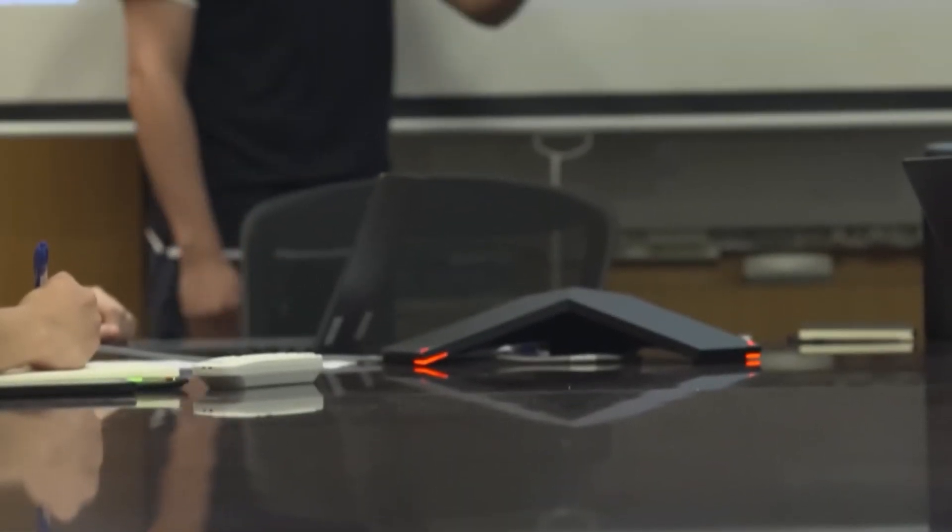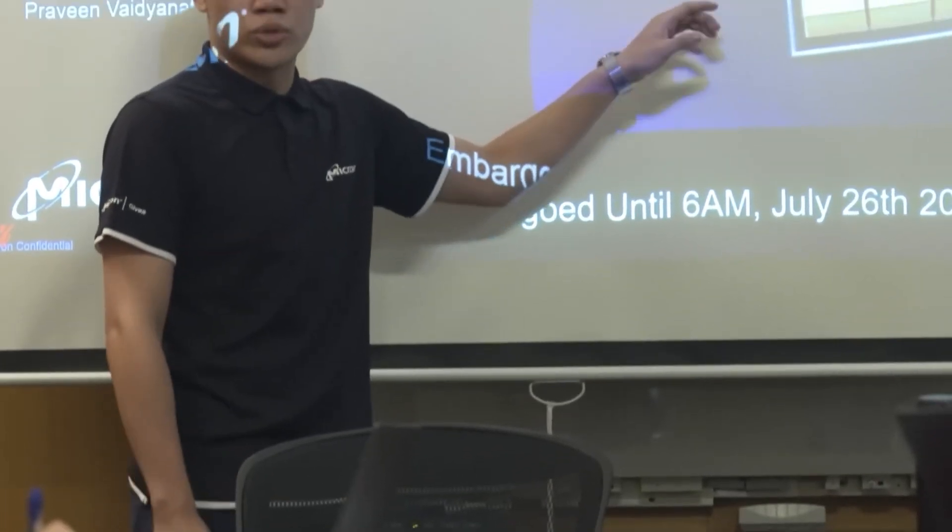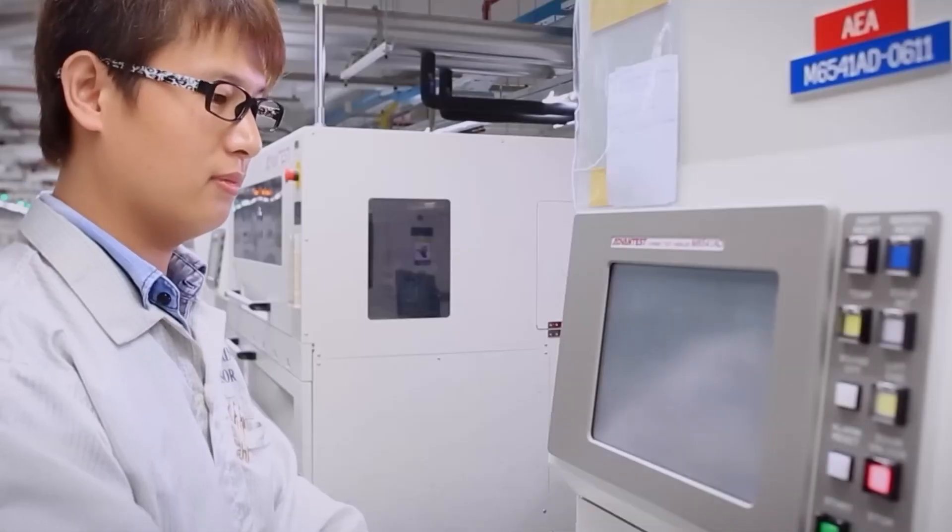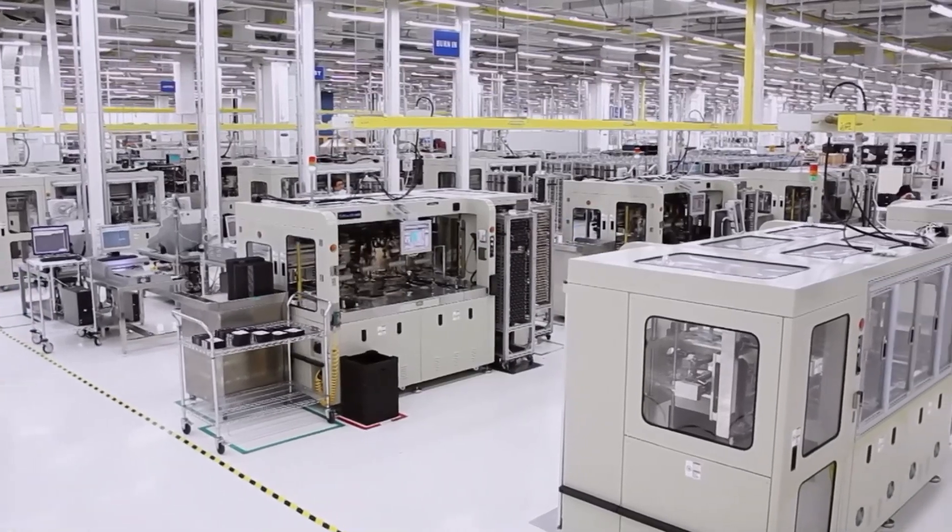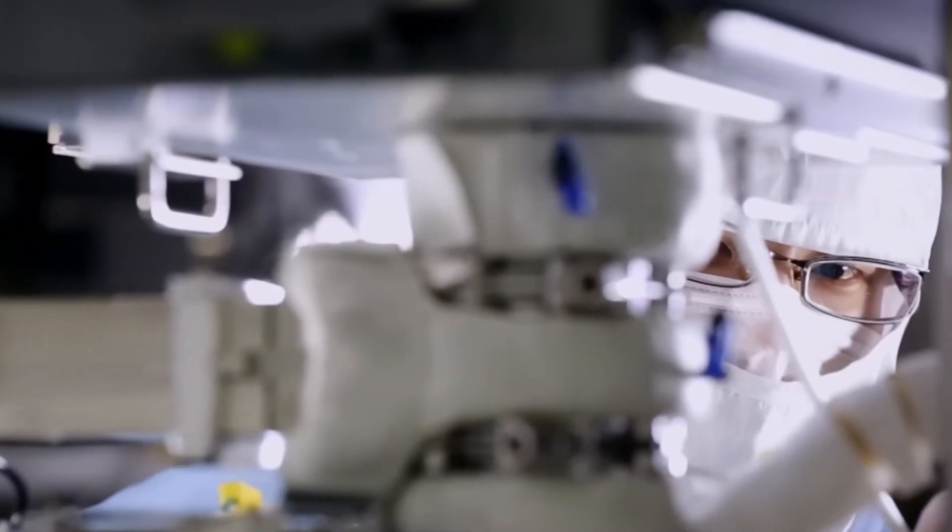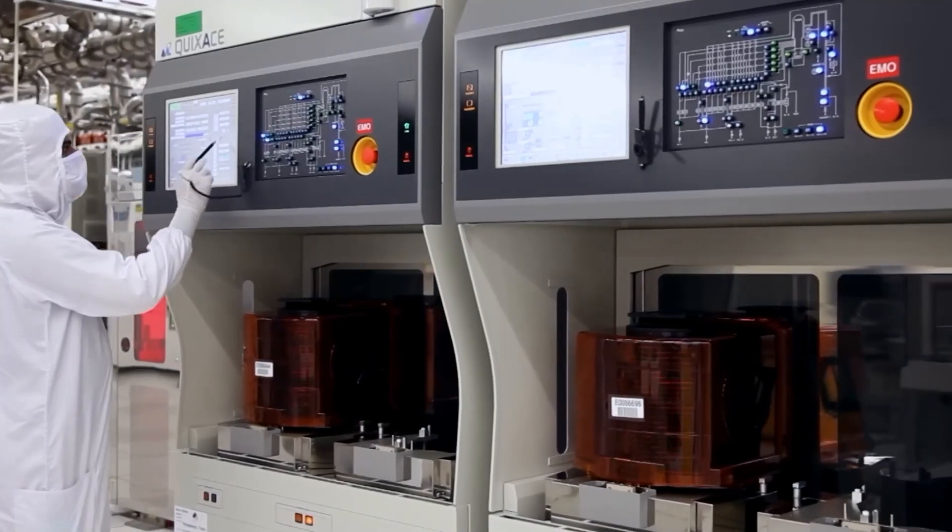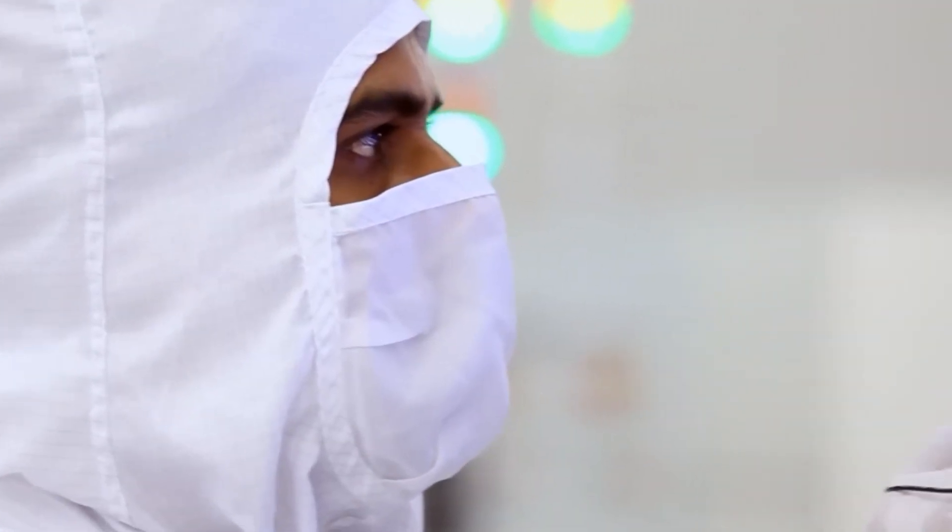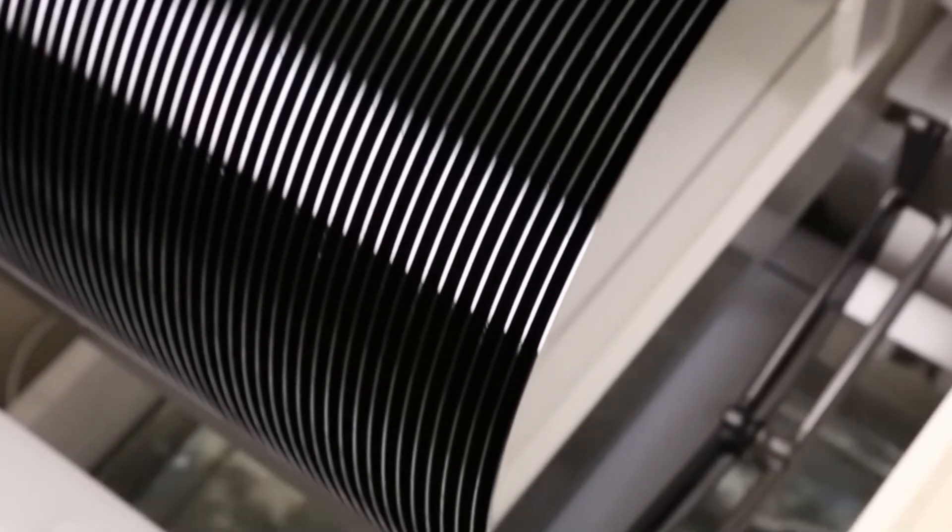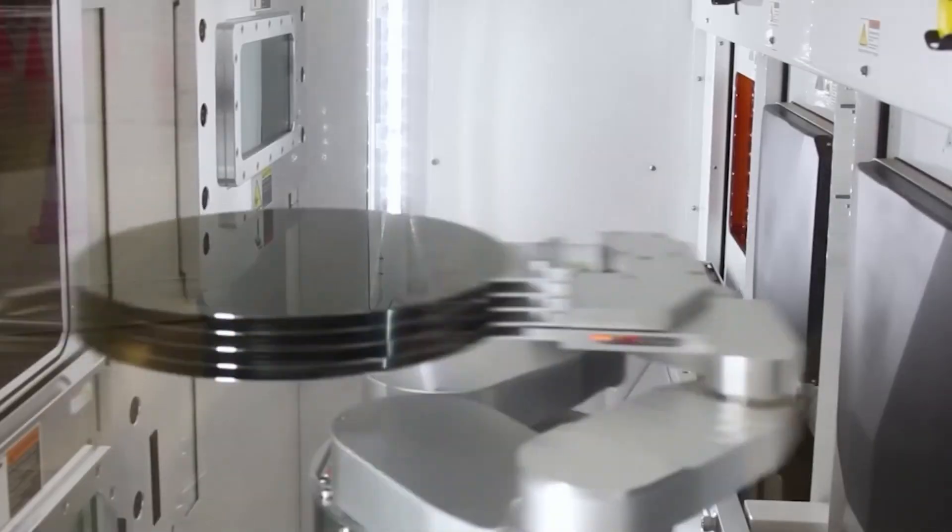Now we step into the epicenter of cutting-edge manufacturing: TSMC's foundries, capable of transforming NVIDIA's blueprints into physical products with jaw-dropping accuracy. This part of the production process begins with wafers made from ultra-pure silicon. These wafers, polished to perfection, are the blank canvases upon which some of the most advanced chips on Earth are built.